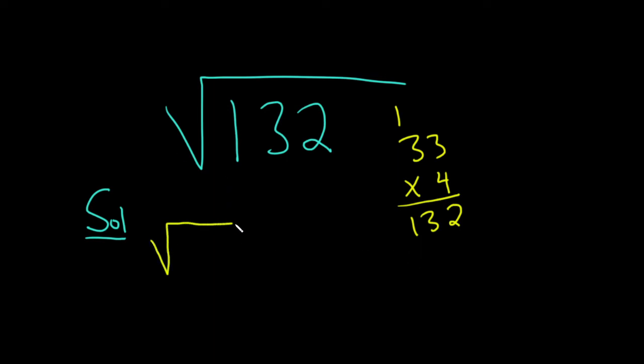We can start by taking the square root of 132, and we can write it as the square root of 4 times 33.